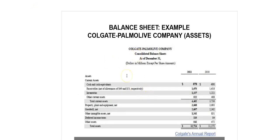Here we have the asset side of the balance sheet of Colgate-Palmolive company for the year ended 31st December 2011. Colgate-Palmolive is a manufacturer and it shows the typical asset accounts for a manufacturer, including cash, inventories, property, plant and equipment, goodwill and other intangible assets. The composition of assets will vary from one industry to another and from one company to another, reflecting the business risk that the company is exposed to.